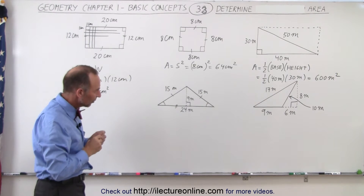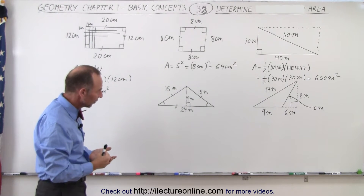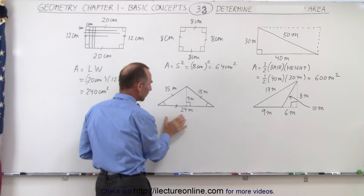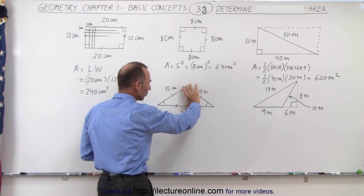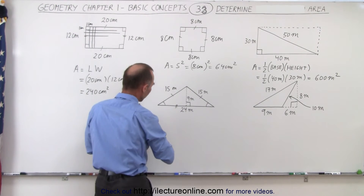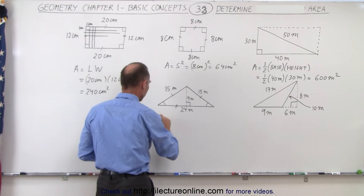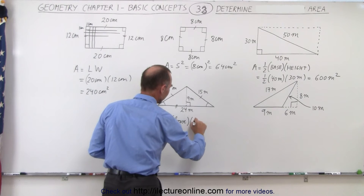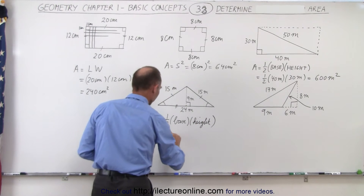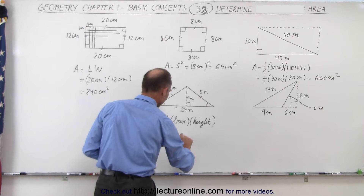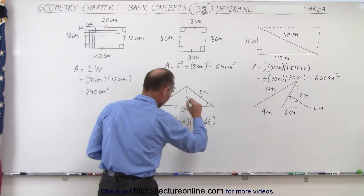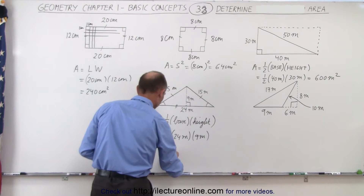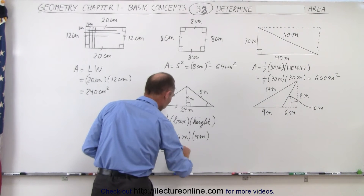Now when you see something like this, it's a little bit different. Again, we could say that the complete area here would be equal to one-half the base times the height. So the height would be nine meters and the complete base would be 24 meters. So the area is equal to one-half times 24 meters times the height of nine meters. Half of that would be 12 times nine, which is 108 meters squared.